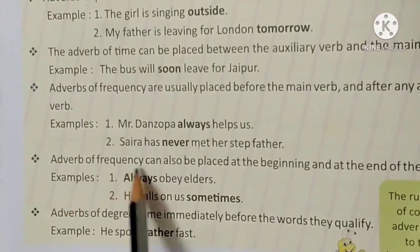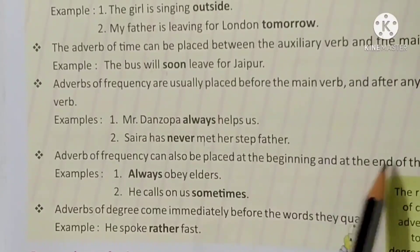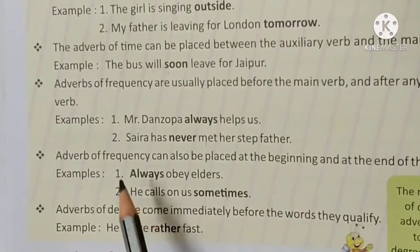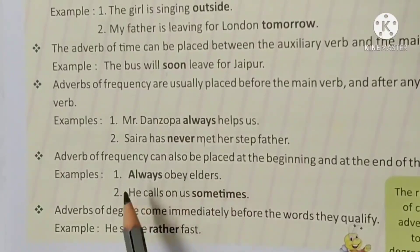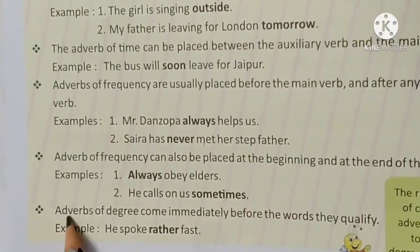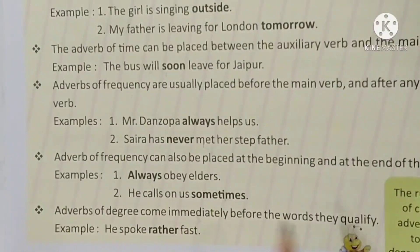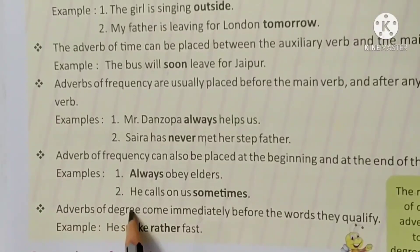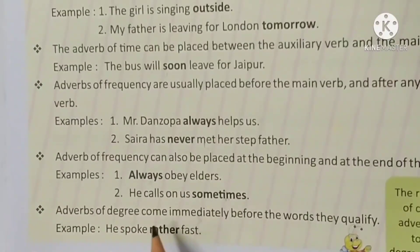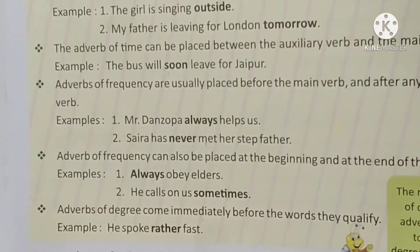Adverbs of frequency can also be placed at the beginning and at the end of a sentence. Beginning में भी use किया जा सकता है और end में भी। Examples: 'Always obey elders.' 'He calls on us sometimes.' Next: adverbs of degree come immediately before the words they qualify. Example: 'He spoke rather fast.'